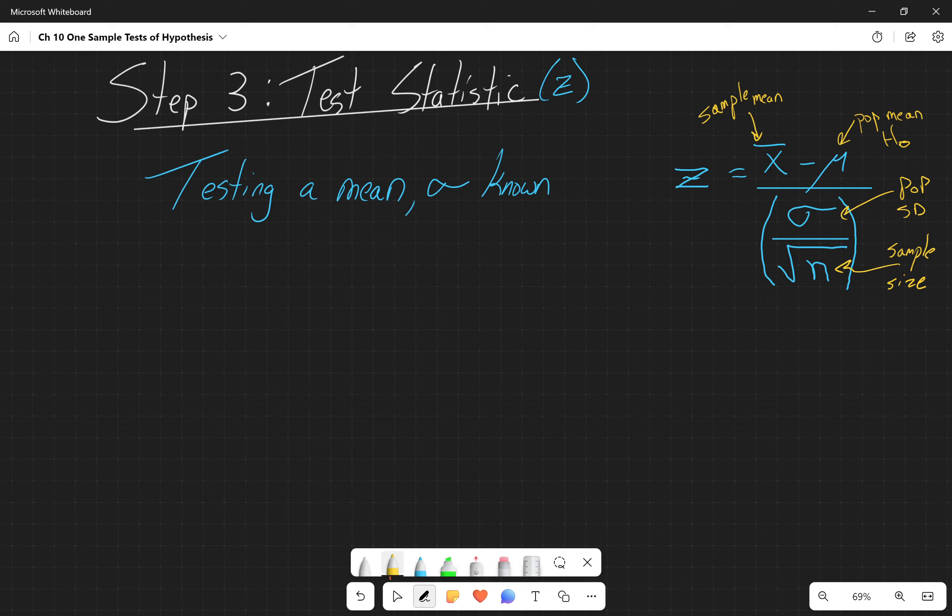So ultimately, what are we trying to do here? We're trying to determine the difference. We're trying to determine whether this distance between the sample mean and the population mean is statistically significant by finding the number of standard deviations that that difference is. So we're trying to find out how many standard deviations this sample mean is away from the population mean.